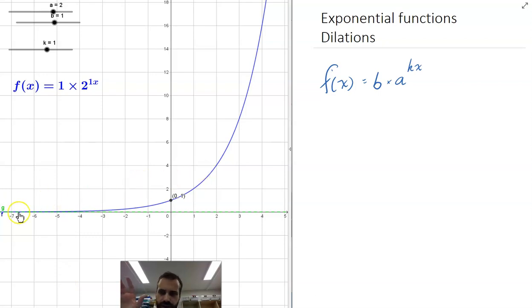Looking at exponential functions again, we've got this really basic one here. This time we're going to look at what happens when we multiply the function by something, so this b here, and also when we multiply our x value by something. Again, you've done this with function transformation before, so this is just a specific case of doing exponential.